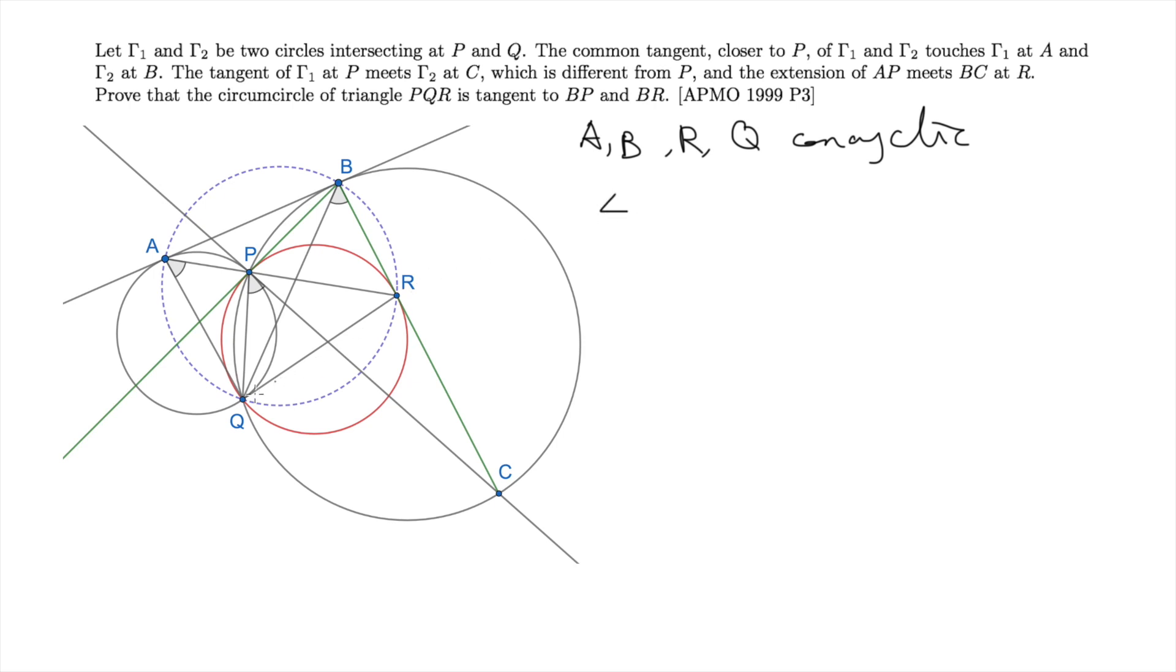First, since B, P, Q, C are on the same circle, the angle QBR equals to the angle QPC. Now since CP is the tangent of the circle gamma 1, we have the angle QPC equals to the angle QAP. So finally, we have QBR equals to QAP, which concludes that A, B, R, Q are concyclic.